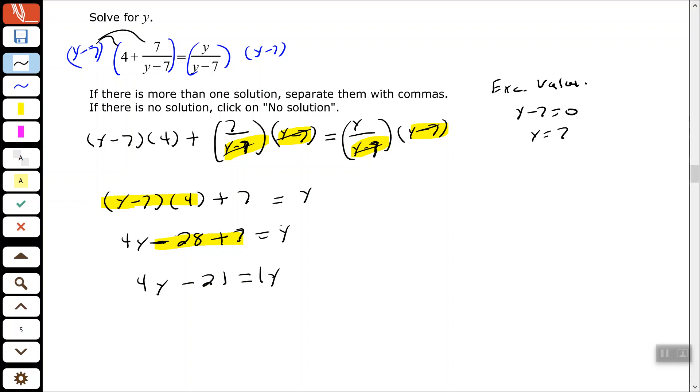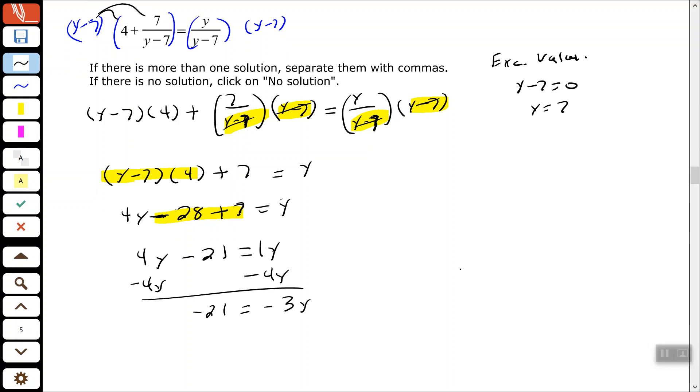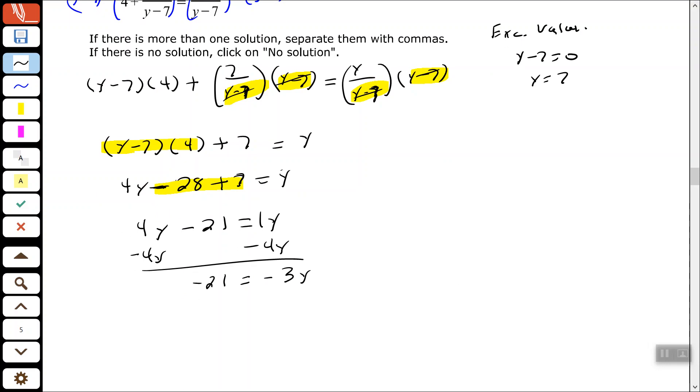All right, and since the only thing I have on the right-hand side is the y variable, I'm going to subtract 4y from each side to get my variable terms combined. So 1y minus 4y is negative 3y. Then I have to undo negative 3 times y by dividing both sides by negative 3. So that tells me that y is equal to positive 7, which happens to be my excluded value.